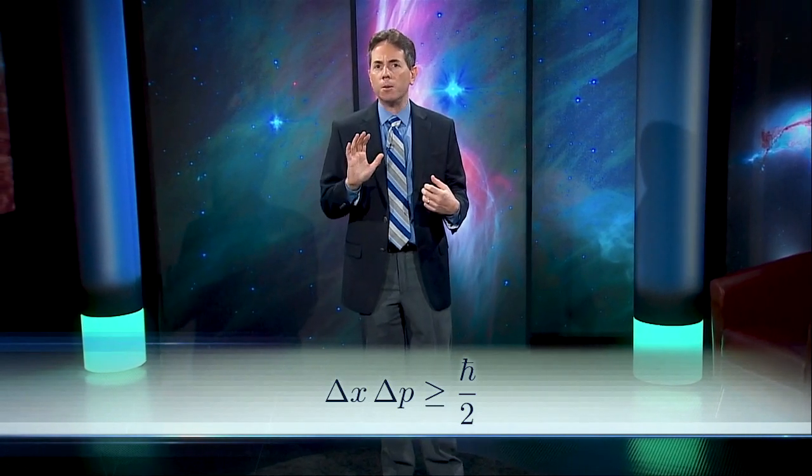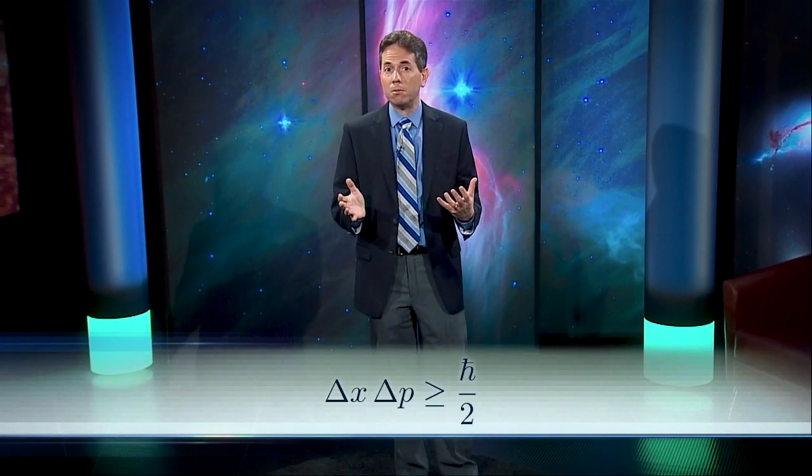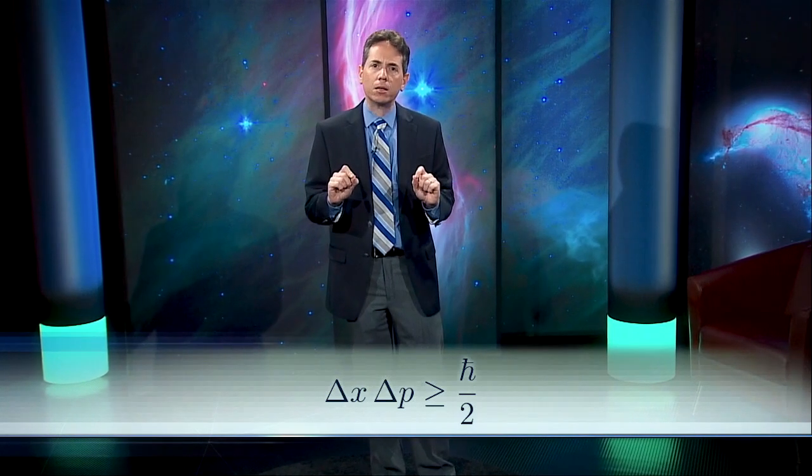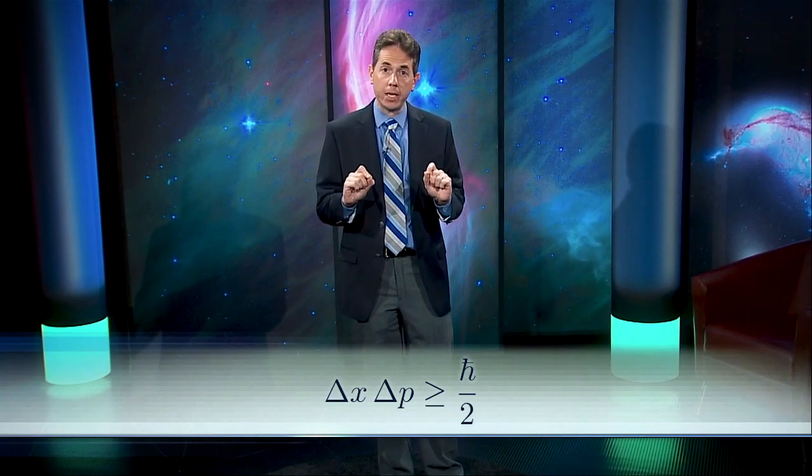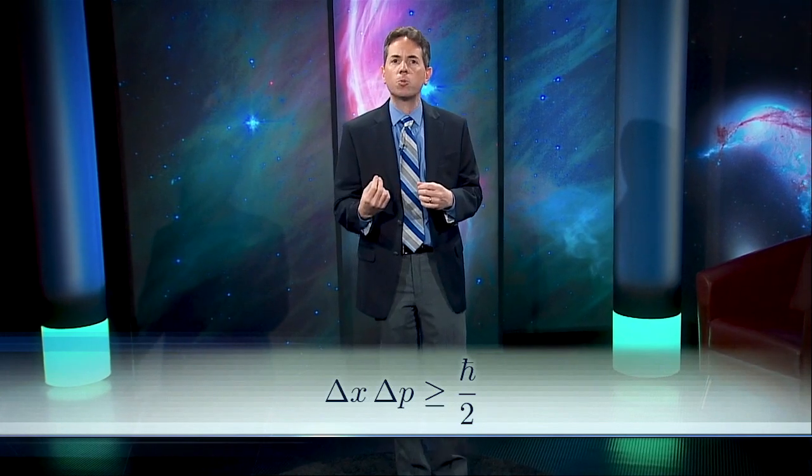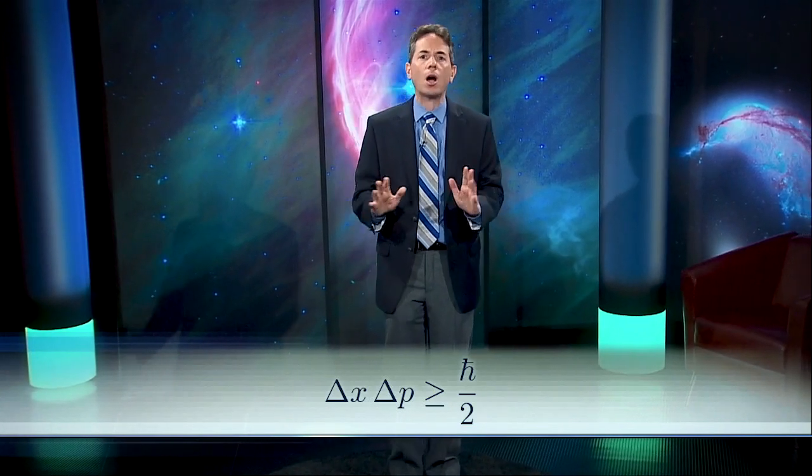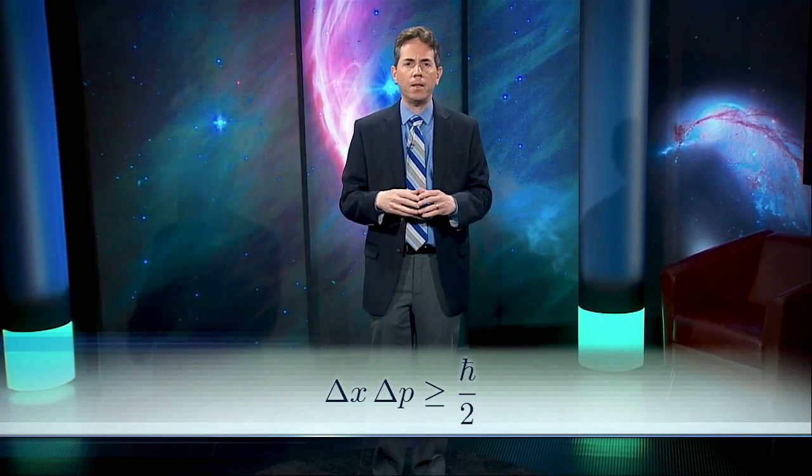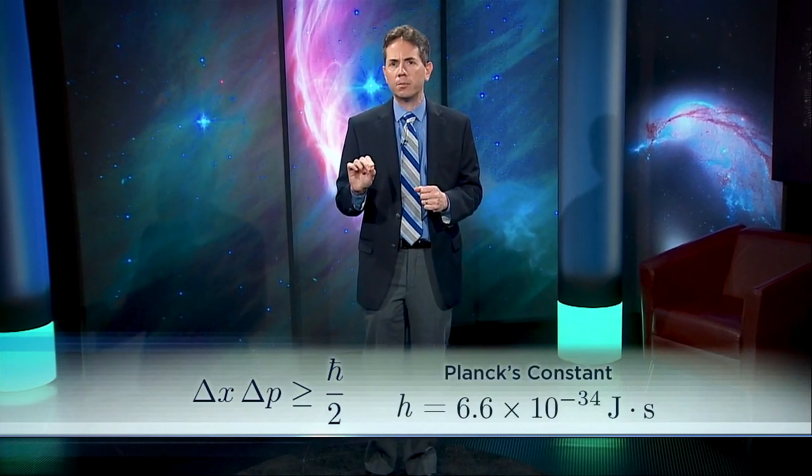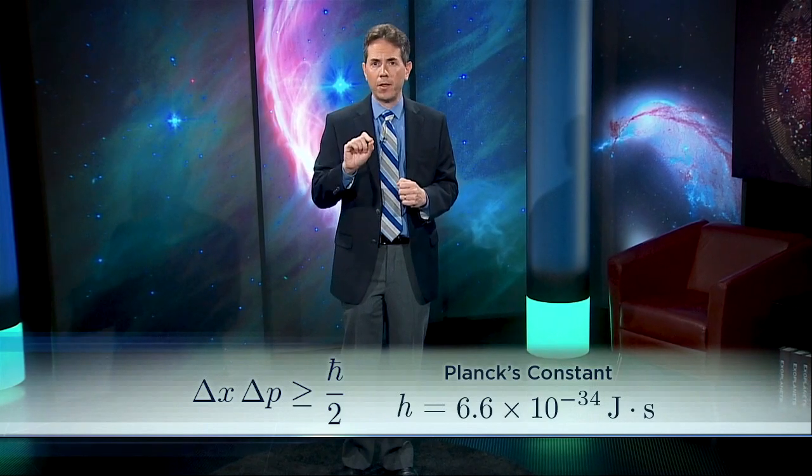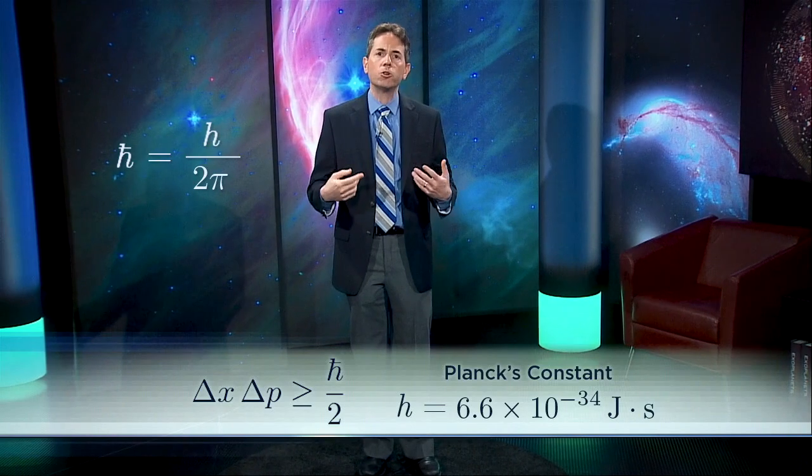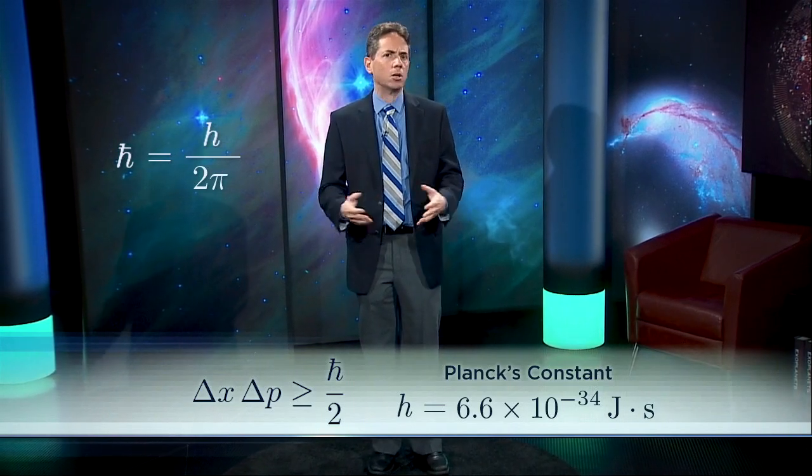It's the range in the possible values of momentum that the particle might have if you measure it. You can't make both delta x and delta p as small as you might want. Their product is always at least h-bar over 2, a fundamental constant of nature. The h is Planck's constant, 6.6 times 10 to the minus 34 joule seconds. And the little bar through the middle is shorthand for h over 2 pi, because that combination comes up so often.